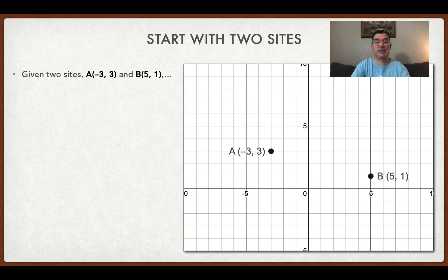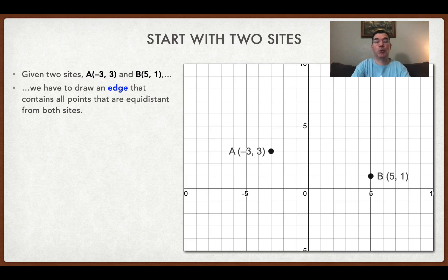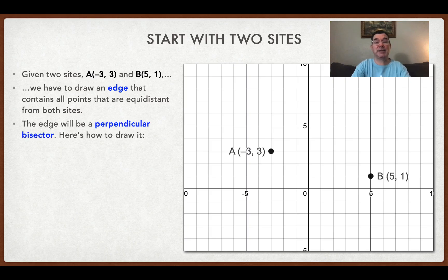We're going to start with the simplest case, which is where you have only two sites in your graph, and that means you need to create only two cells containing those sites. We're going to draw an edge between those two sites such that every point that lies on that edge is going to be equidistant from each of those two sites. That's actually called a perpendicular bisector, and you may have learned about that in geometry, but just in case you have forgotten or you didn't learn about it, here's how we're going to draw it.